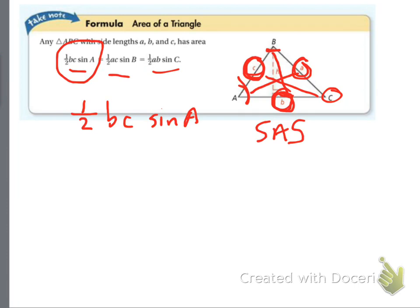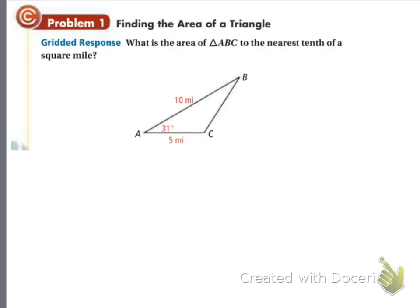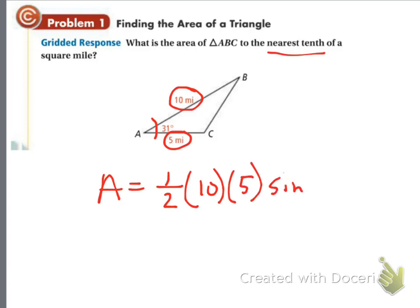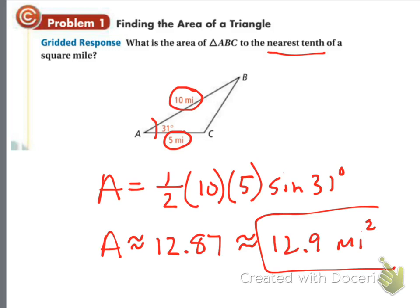So what is the area of triangle ABC to the nearest tenth of a square mile? Side-angle-side, see how that works. The area is one half times 10 times 5 times the sine of 31 degrees. The good news is you could put this all in your calculator at one time, and that's exactly what I'm doing right now. You get approximately 12.87, we round to the nearest tenth, so that's 12.9 miles squared because we're finding area. It's very simple just to use that formula.